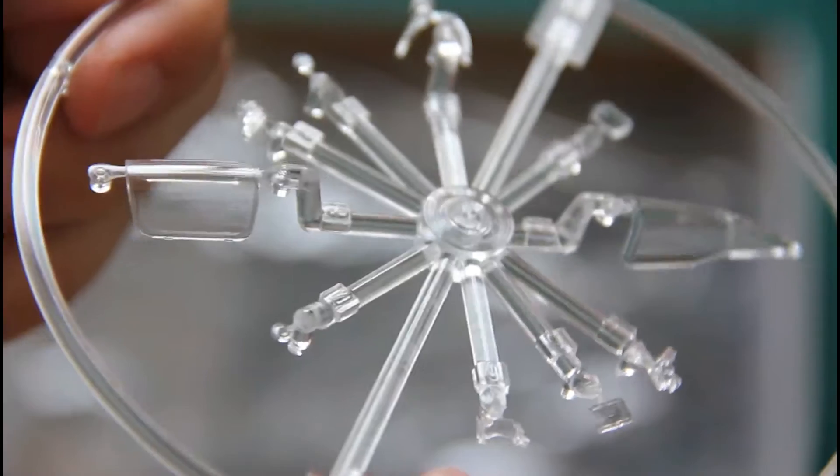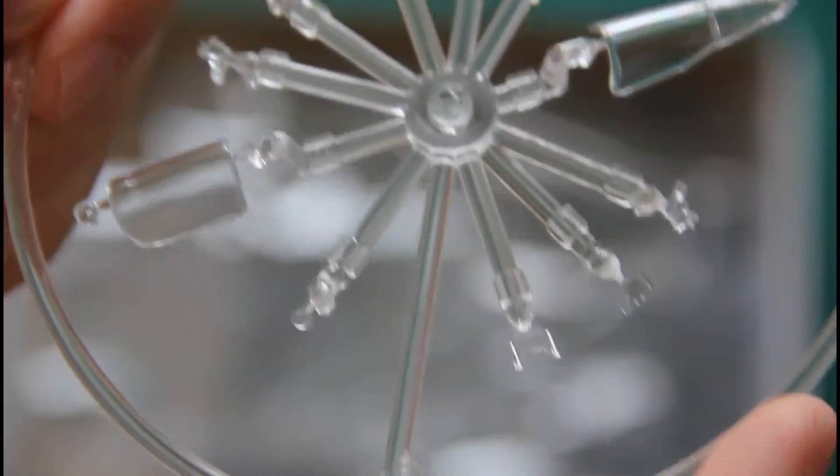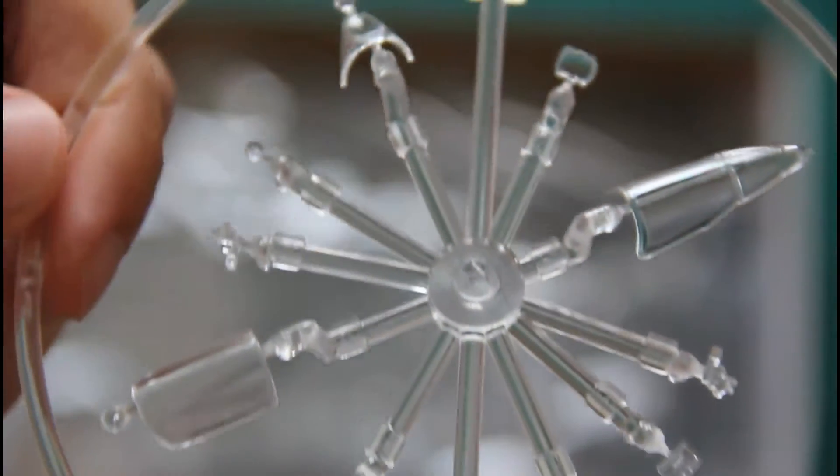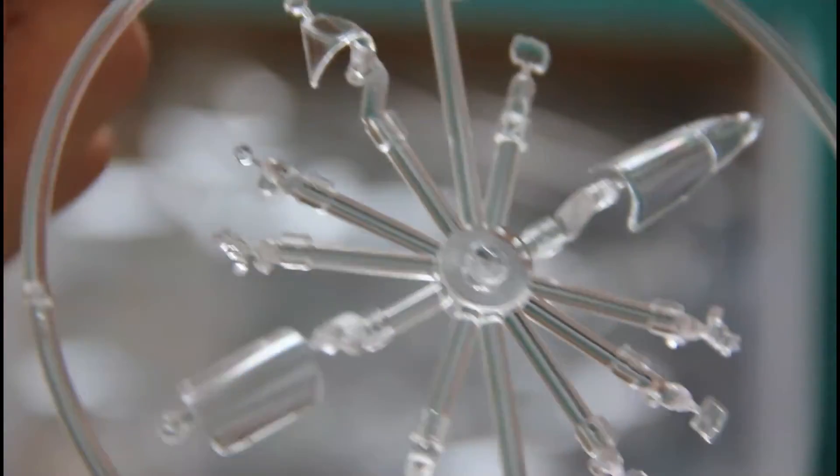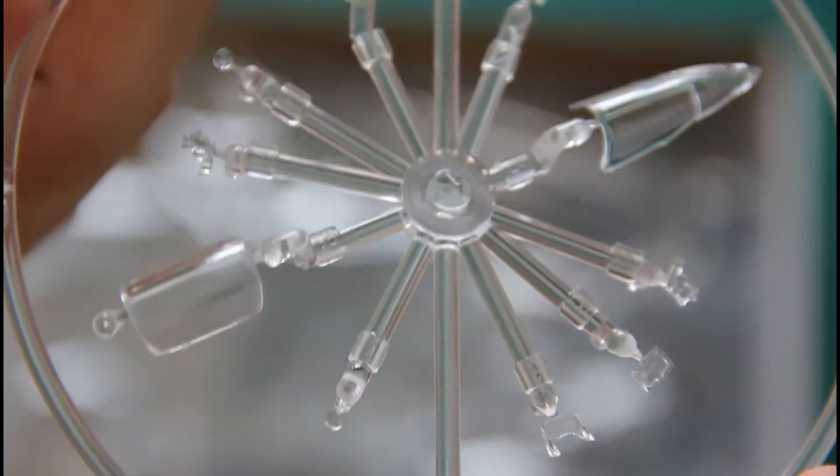So here we have transparent sprue, as you can see there are plenty of see-through parts and of course canopy is divided into several parts so you would be able to open it and show assembled cockpit. Moreover it's even more important because we have PE parts included so cockpit should be quite detailed.